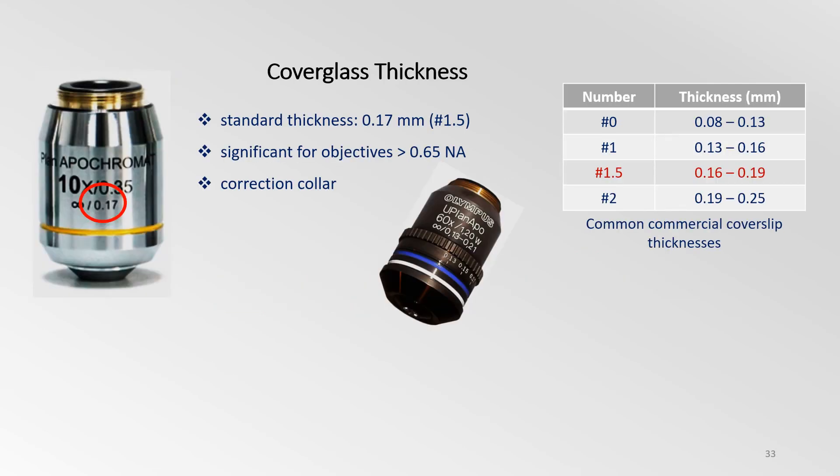The correct cover glass thickness is another important factor in optimal imaging. If the wrong thickness is used, a serious loss in resolution is expected, especially with high NA objectives. The optimum cover glass thickness of many objectives is 0.17 mm. This is commercially available as a number 1.5 or 1.5 cover glass. For some high NA objectives, a deviation of only a few microns from the standard 0.17 mm can significantly reduce resolution.